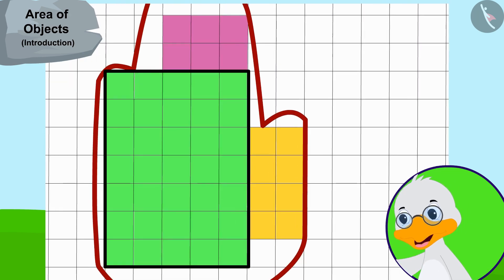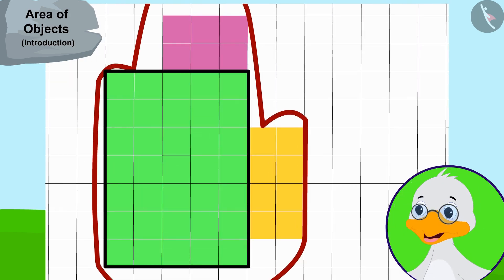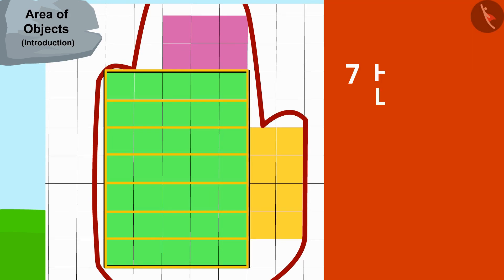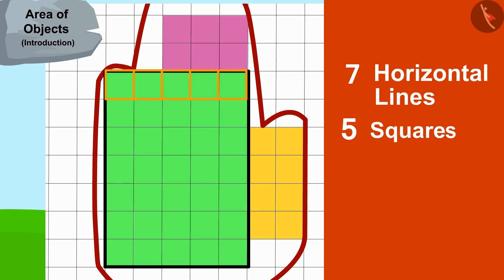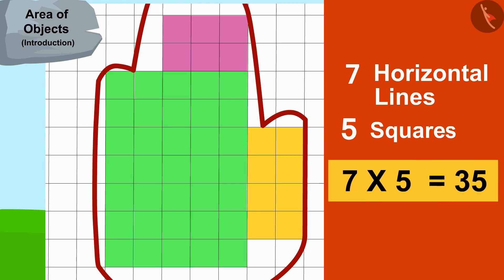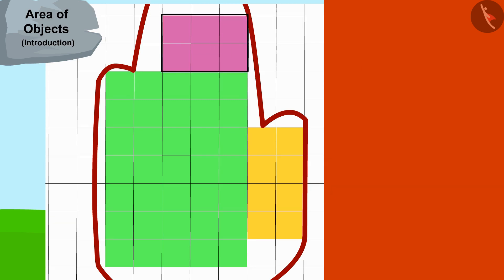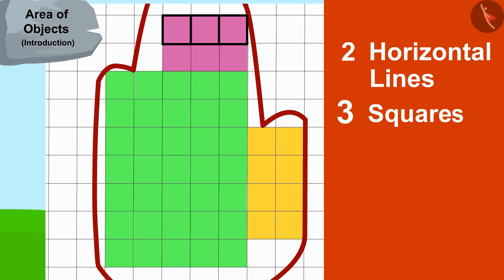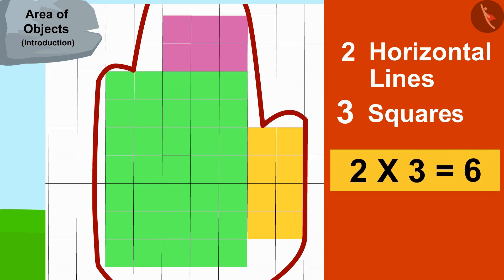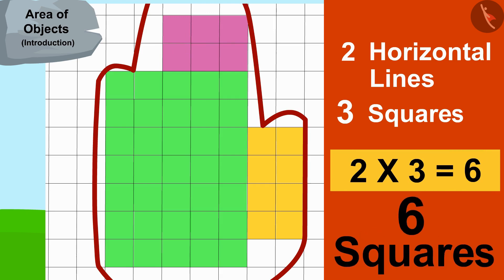Uncle said: now I will first find the area of each rectangle. The first rectangle has seven horizontal lines and each line has five squares — that means there are seven times five, or thirty-five squares in this rectangle. The second rectangle has two horizontal lines and each line has three squares — that means there are two times three, or six squares in this rectangle.